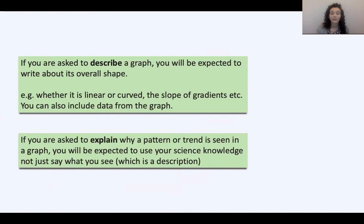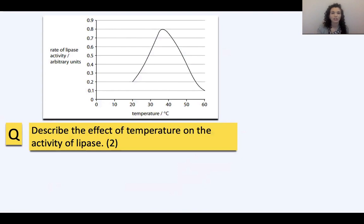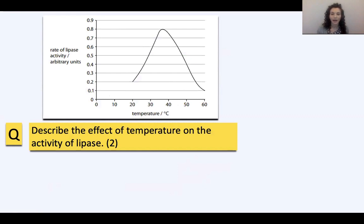That's different from when you're asked to explain a pattern in a graph — when you're asked to explain why something's happening, that's when you need your scientific knowledge to explain why the graph has the pattern that it does. Here is a graph of the rate of lipase activity — lipase is an enzyme that breaks down fats or lipids in the body. The graph shows rate of lipase activity on the y-axis and temperature changing along the x-axis. The question says: describe the effect of temperature on the activity of lipase. In a describe question, just describe what's happening in the graph as if explaining it to someone who can't see it.